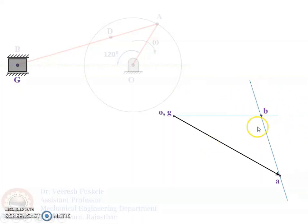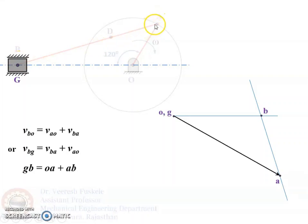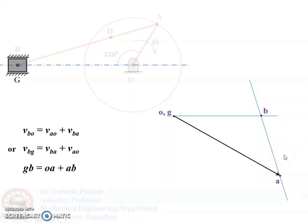To mark the sense of the vectors, we need to write the vector equation. The vector equation is as follows: the velocity of B relative to O equals the velocity of A relative to O plus the velocity of B relative to A. Or the velocity of B relative to G equals the velocity of B relative to A plus the velocity of A relative to O. In vector form, GB equals OA plus AB. The sense and direction of the vectors will give you OA plus AB equals GB. This is how you draw the velocity diagram.